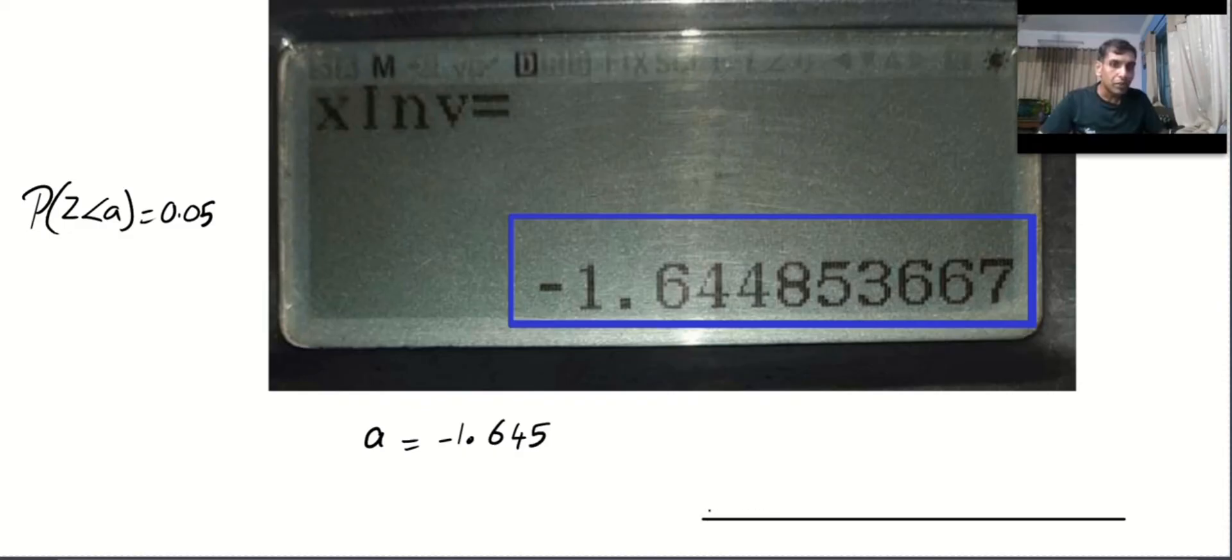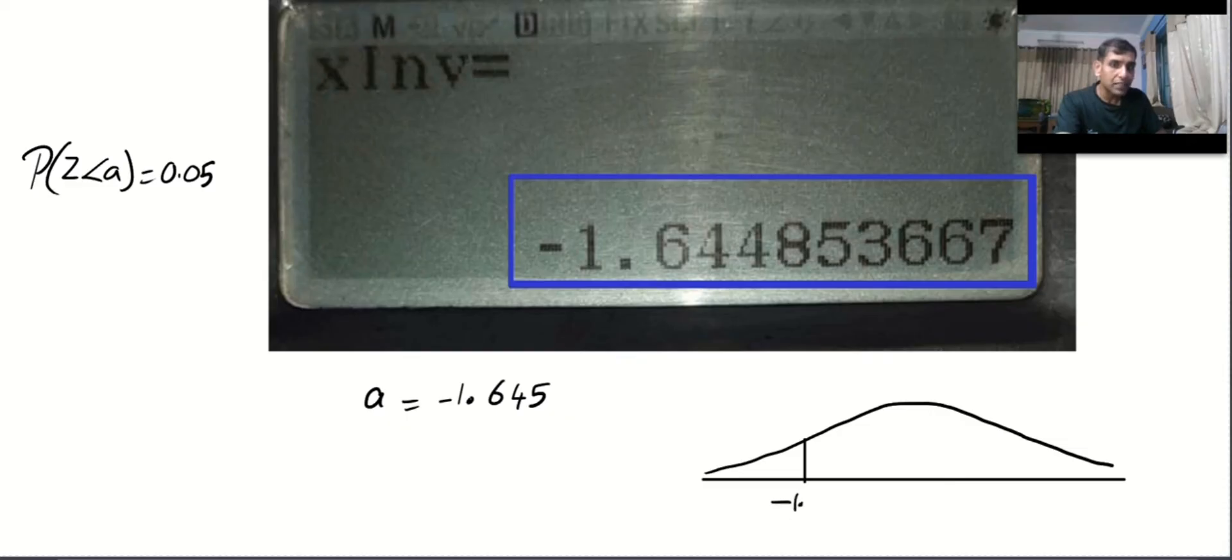Now, you have to understand one more very important thing, especially when it comes to testing. Look at this. This means the area below minus 1.645 is 0.05. Also, the area after 1.645 is 5% because of the symmetry. Anyway, this is your required answer.